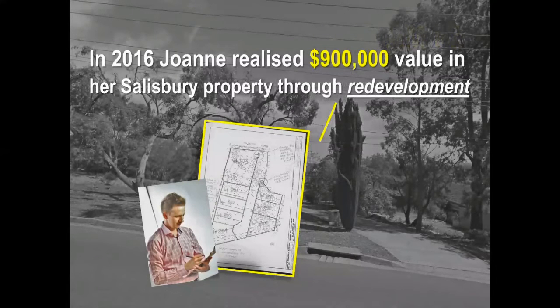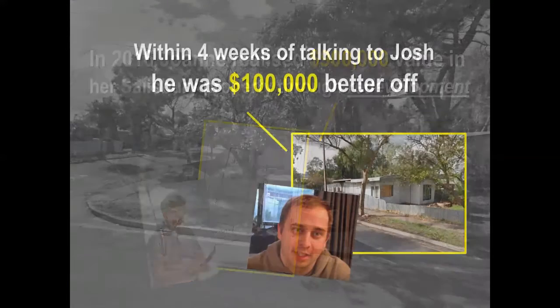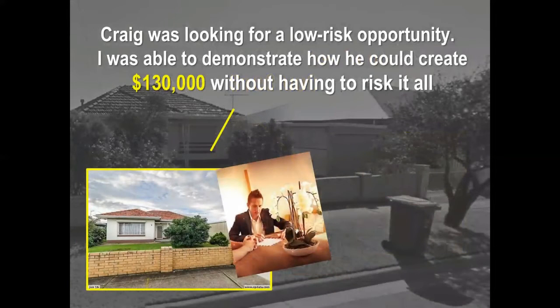Every day I get clients such as Joanne, who came to me with a property they knew had development potential but weren't sure how to realize it. After years of unsuccessfully trying to profit, I assessed their property and explained how I could help them make over $900,000 in profit — we're now just waiting on the subdivision to go through. Just four weeks after talking to Josh, he was over $100,000 richer and it only took about five hours of his time. Craig had money to invest and wanted to make sure he did it right — we analyzed his development and showed him how to make $130,000 profit without having to risk anything at all.